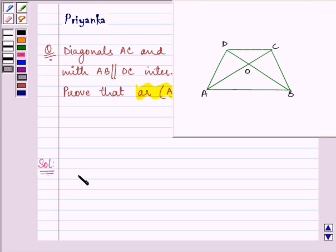Here we are given that AB is parallel to DC, and also ABCD is the trapezium.